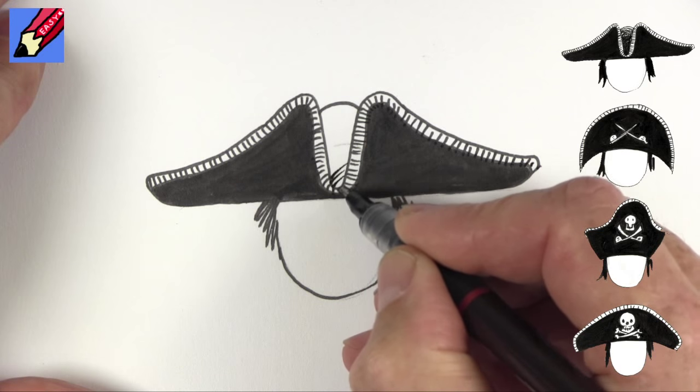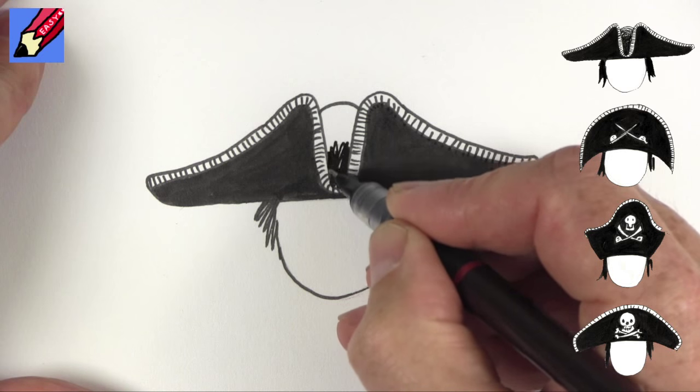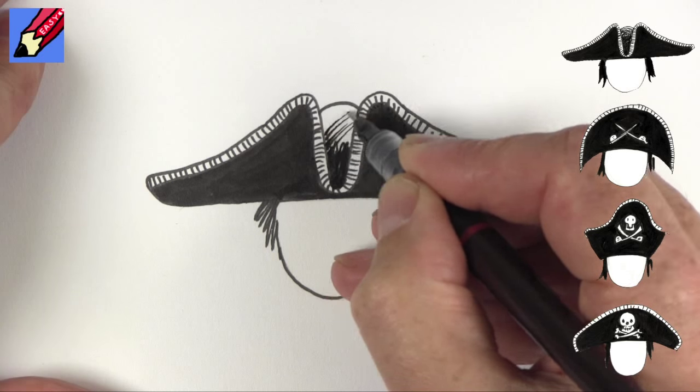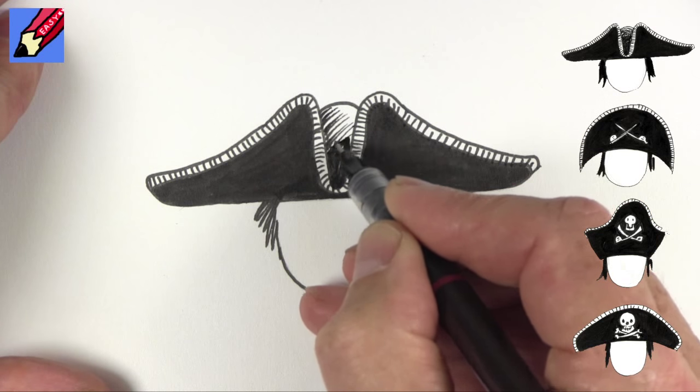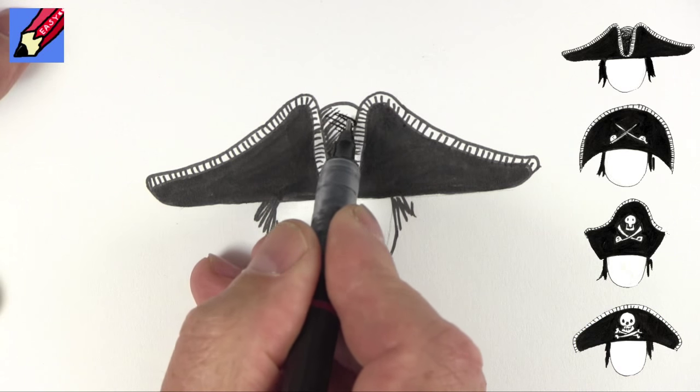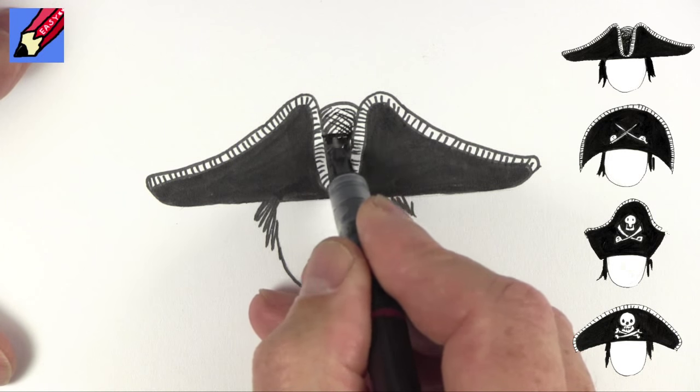And then inside here this will be pretty dark up to about there, and then you want to start putting hatching in there. Hatching on the other side and then maybe some hatching up the middle.